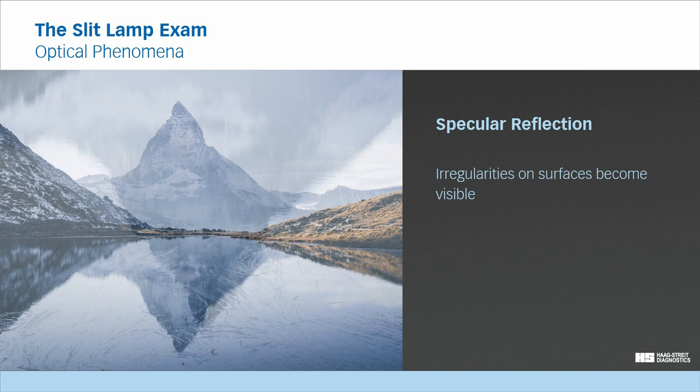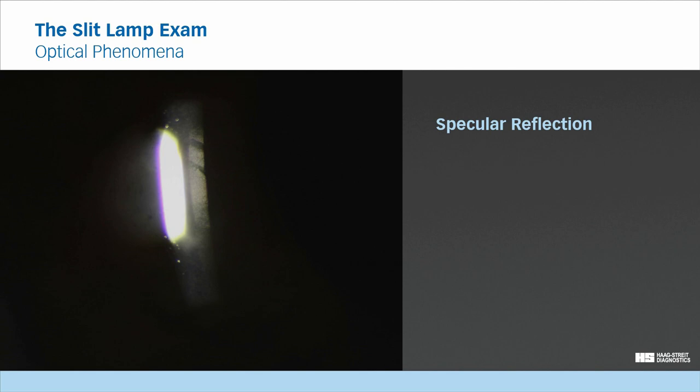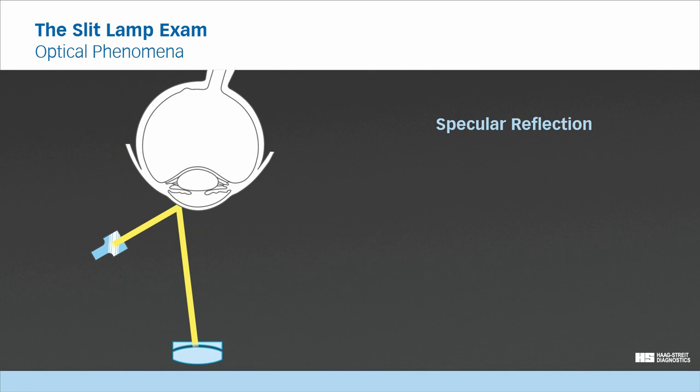Irregularities in this mirror-like surface disturb the reflection and thus become easily visible. During slit lamp examination, this phenomena can be used when examining irregularities on the ocular surface, like in this case of herpetic keratitis, or in more specific cases such as abnormalities in the corneal endothelium.